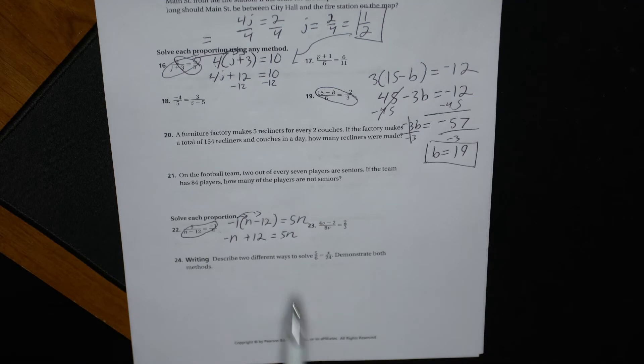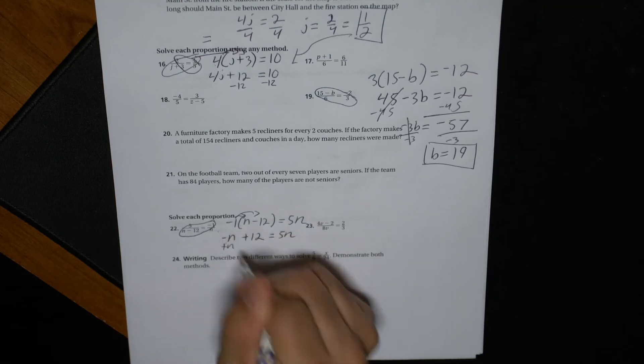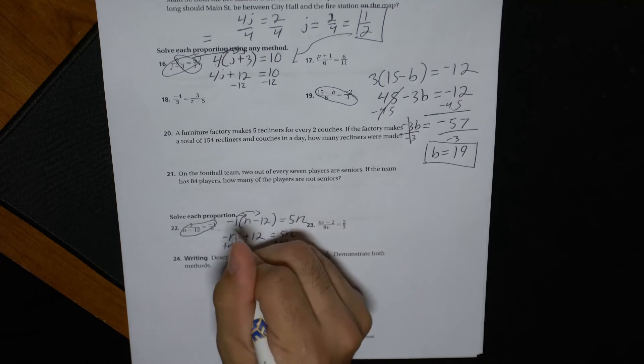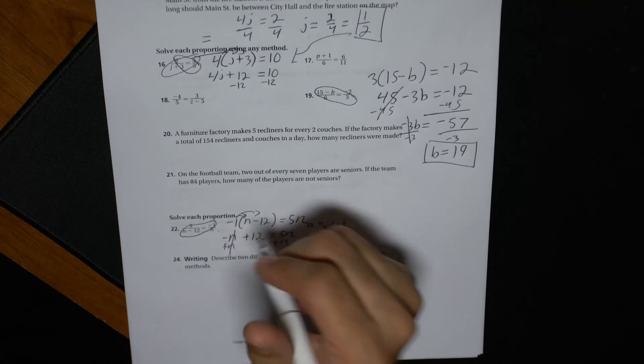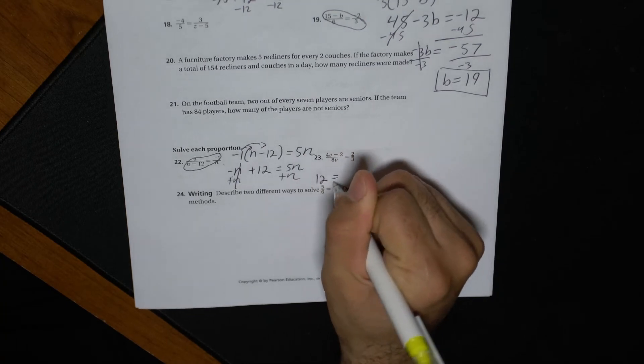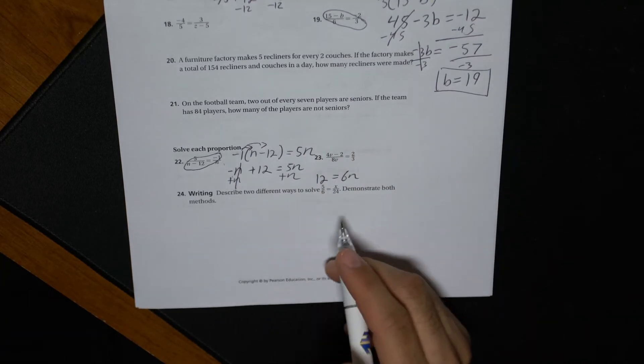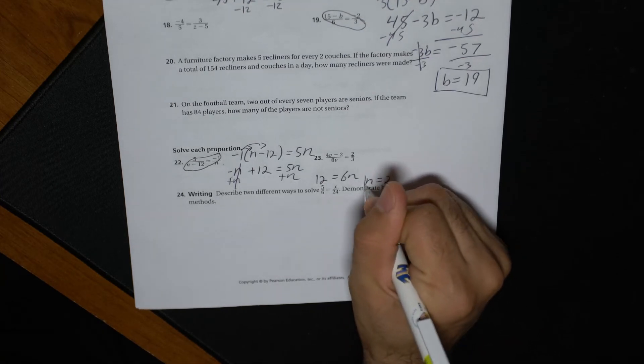Now I could move this five n to the left side, but it's going to make it a negative and I don't want that. So what I want to do is I'm going to move this negative n to the right side. And that's going to give me, I'm going to write it over here, 12 equals six n. Once I get there, six times what gives us 12? Well, that means n equals two.